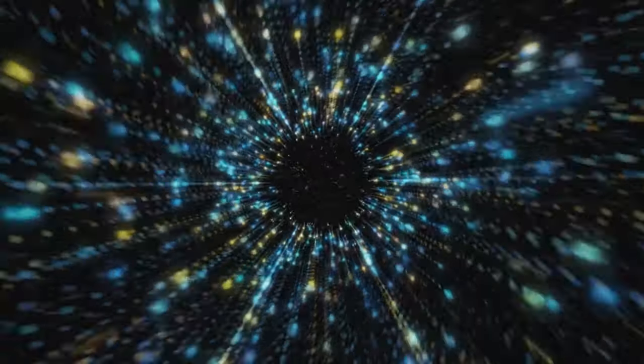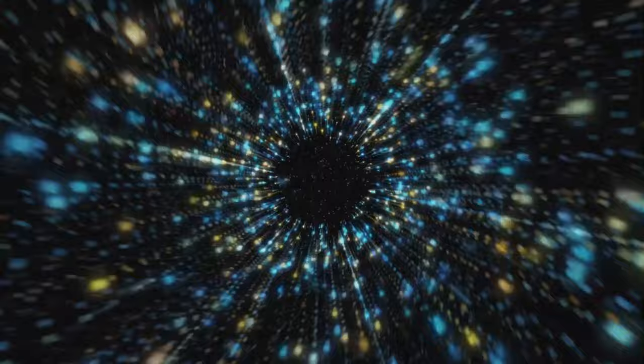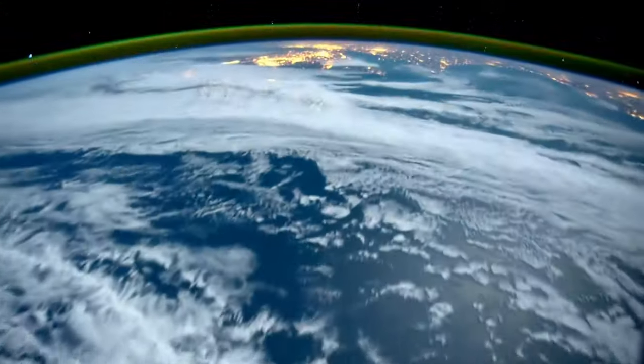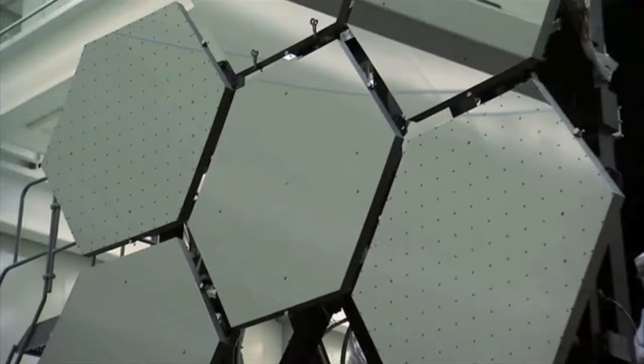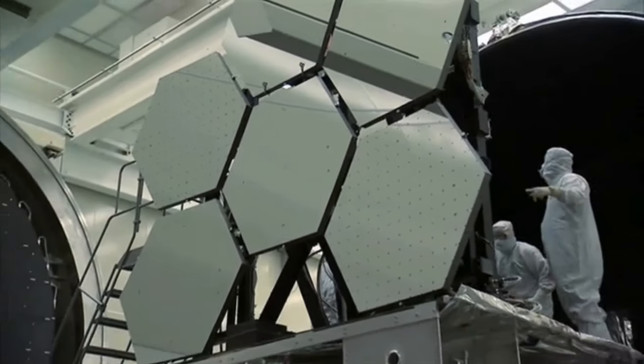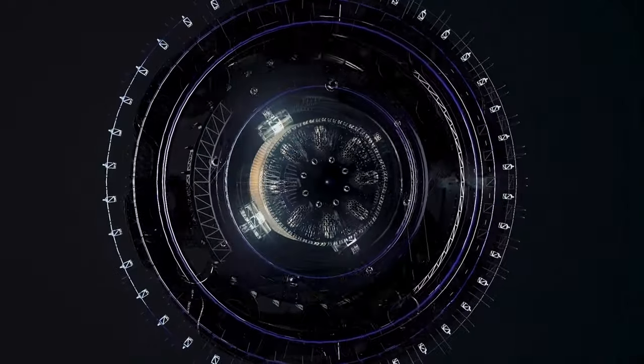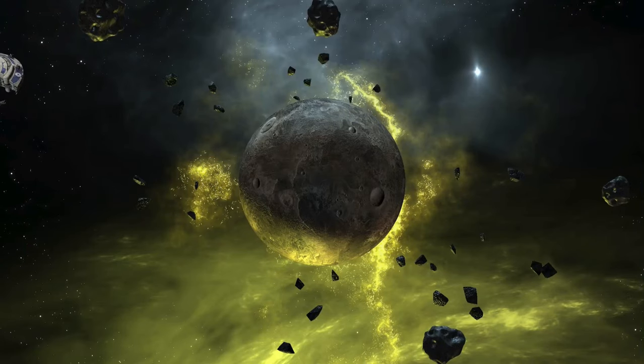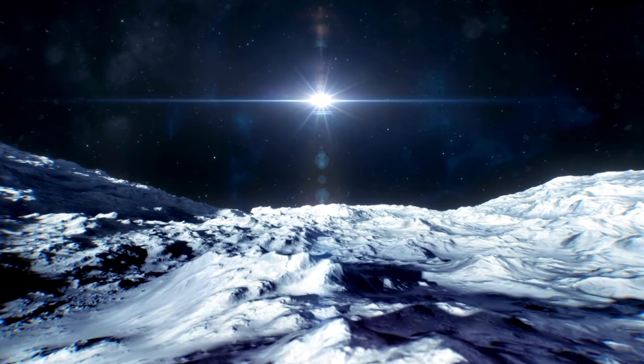Launching and deploying the JWST is a complex endeavor, representing a collaborative effort between NASA, the European Space Agency (ESA), and the Canadian Space Agency (CSA). Launched on December 25, 2021, via an Ariane 5 rocket from French Guiana, the JWST embarked on a journey involving several deployments and maneuvers to reach its designated orbit, situated approximately 1.5 million kilometers (930,000 miles) from Earth.